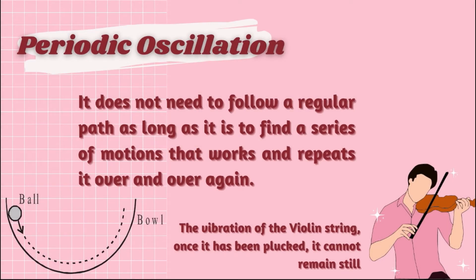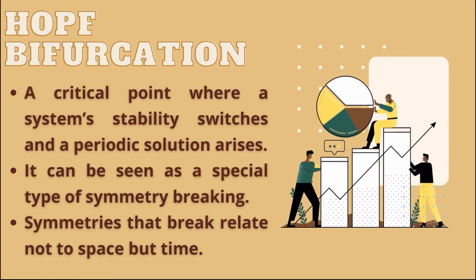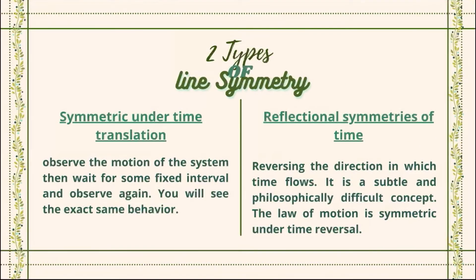Here are the types of oscillation. First, we have periodic oscillation. It does not need to follow a regular path as long as it defines a series of motions that works and repeats it over and over again. Many oscillations arise out of steady states. Examples of periodic oscillation are objects that repeat themselves in a regular cycle, such as sine waves, vibrations of violin strings, and the swinging movement of pendulums. On the other hand, we have Hopf bifurcation. It is defined as a critical point where a system's stability switches and a periodic solution arises. It can be seen as a special type of symmetry breaking where symmetries that break relate not to space but to time.